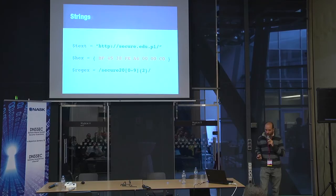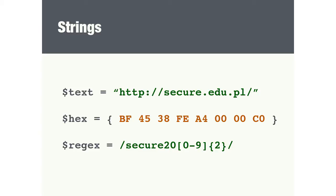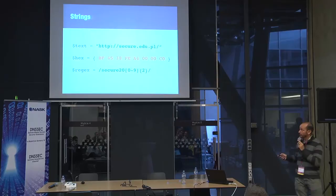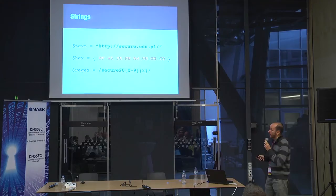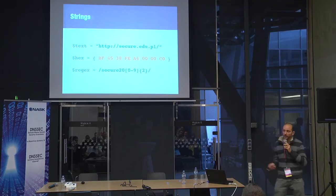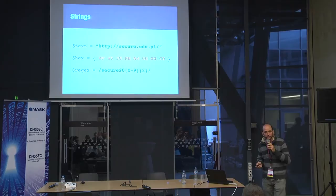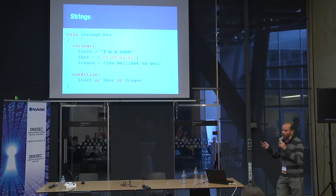Up to this point, we've seen examples based only on text strings. But there are other types of strings in YARA: hex strings and regular expressions. Hex strings are sequences of bytes represented in hexadecimal form. Regular expressions are standard regular expressions like you may know from other programming languages. You can mix all these types of strings together in the same rule — there's no problem with that.